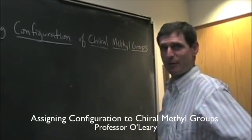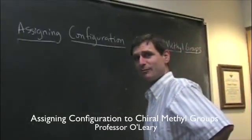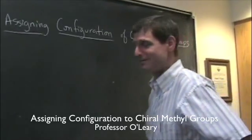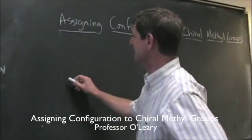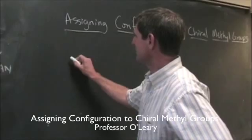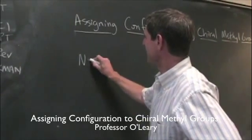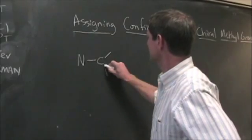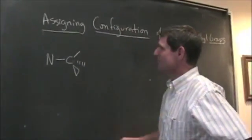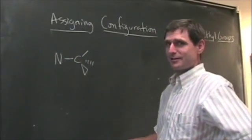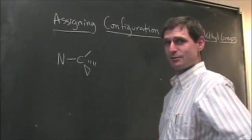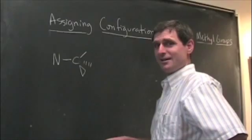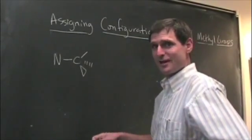We're finding the configuration of the chiral methyl group. This is probably one of the more obscure things you'll ever run into in a field of chemistry. What we're going to do is take the chiral methyl group that's attached to nitrogen. So this is a methyl group that's asymmetric or stereogenic, if you will, on the basis of having three isotopes of hydrogen attached.